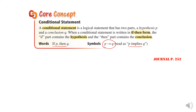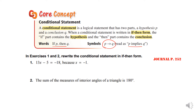We're going to do a couple of examples from your journal on page 252. They want you to rewrite the conditional statement in if-then form. Don't assume that what comes first is always your if, because the "because" is what has to be true in order for this to be. So your statement would be: if x equals negative one, then 13x minus five will equal negative 19.